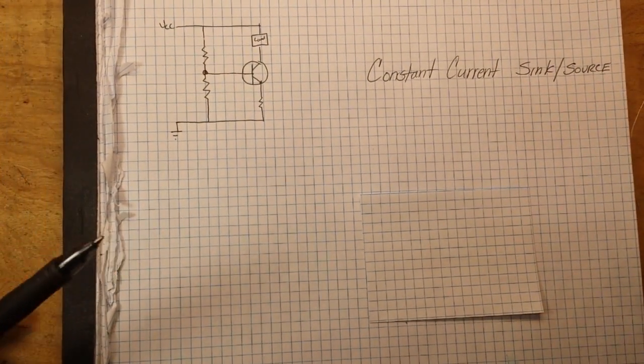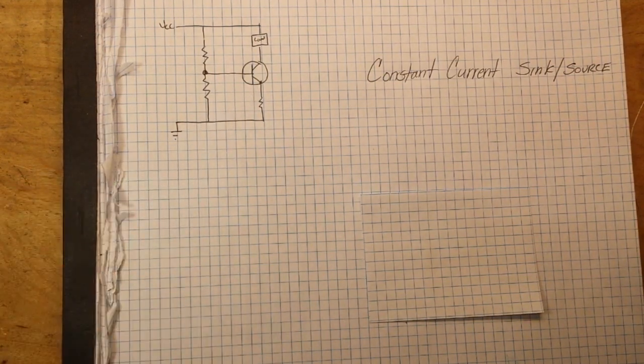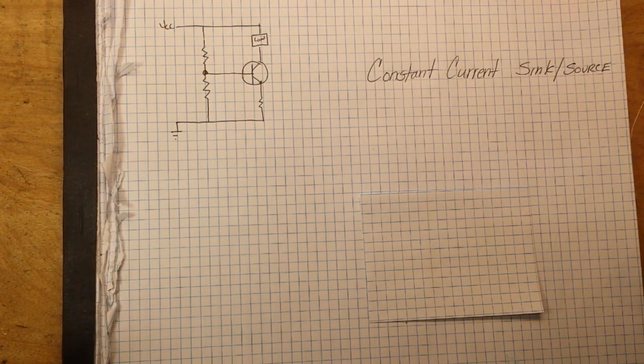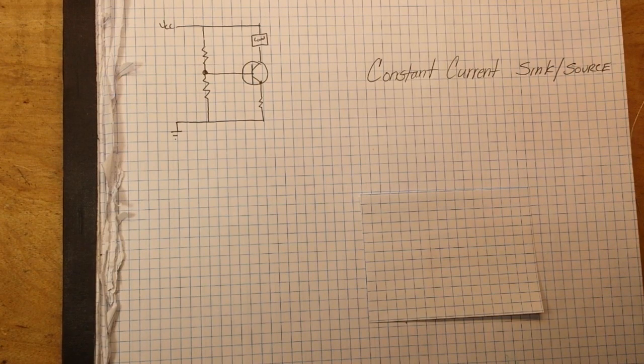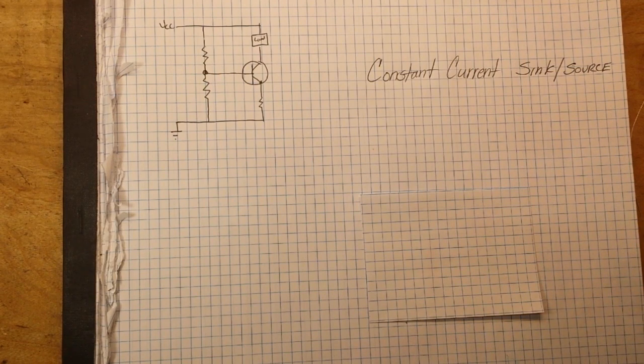First of all, the other day we did a video where we used a single transistor to make a constant current source, or as some of you have pointed out, a constant current sink. Well, it would be a constant current negative source or a sink, either way.